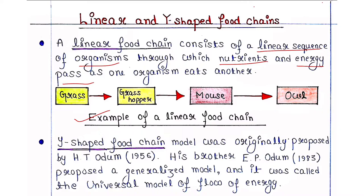Here is an example of a linear food chain. Grass is the producer because it is autotrophic and makes food through photosynthesis. Grasshoppers eat grass, so grasshoppers are the primary consumer. Mouse eats grasshoppers, so mouse is the secondary consumer. Owl eats mouse, so owl is the tertiary consumer. They are all placed in a linear sequence through which nutrients and energy are passed.